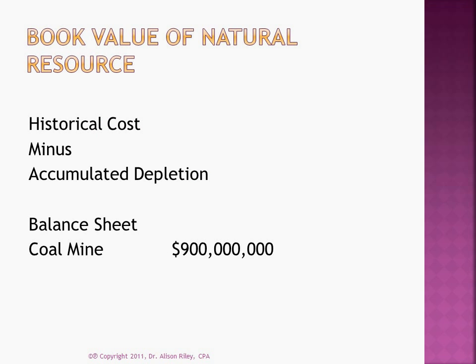The book value of a natural resource is calculated in the same way as for capital assets. However, the balance sheet presentation is similar to that of intangible assets — the asset is stated at historical cost minus accumulated depletion, because the resource itself is credited in the depletion expense journal entry. The accumulated depletion is not stated separately on the balance sheet.